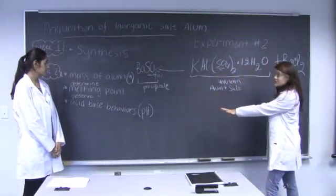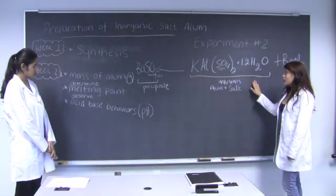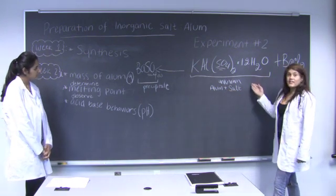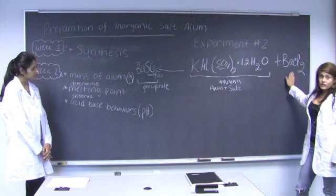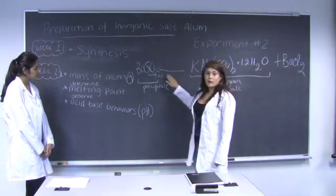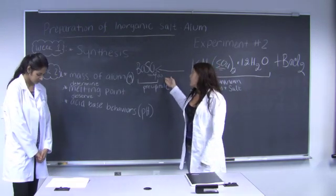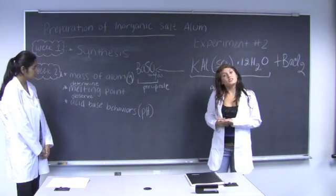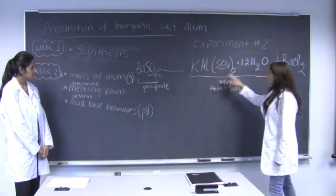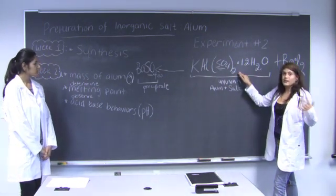Along with those procedures in week two, we're going to be conducting another experiment in which we're given an unknown. The unknown contains alum and another salt. We're going to react this unknown with barium chloride, and they're going to produce the precipitate barium sulfate. Because barium sulfate is extremely insoluble in water, we're able to collect it and measure its mass. By taking the mass of the barium sulfate, we can therefore determine the mass of the alum and the unknown, which will help us determine the chemical composition.